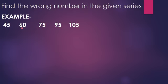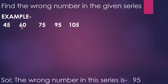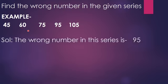Let us see the solution. The wrong number in this series is 95. How is 95 the wrong number? The pattern, the rule which is followed in this series, is the table of 15. 15 threes are 45.